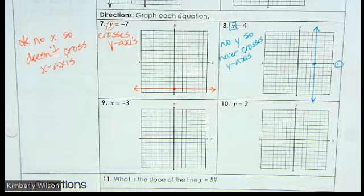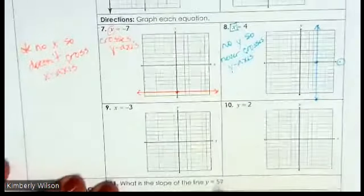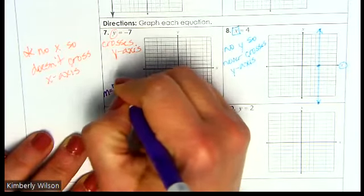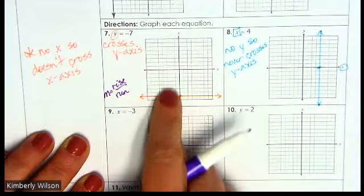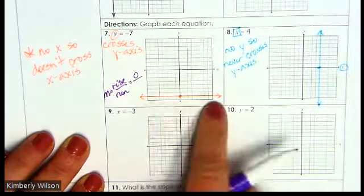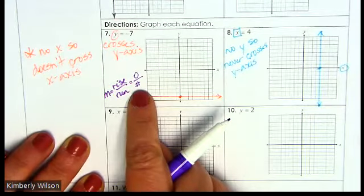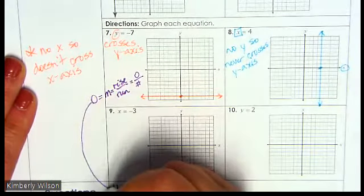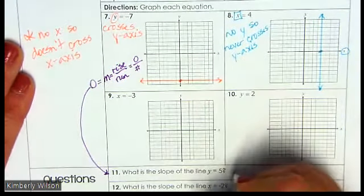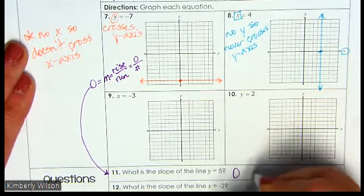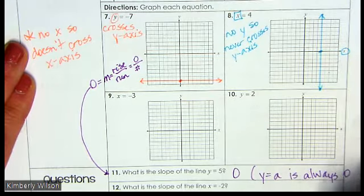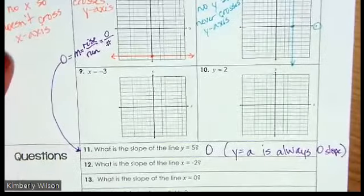Now let's do some thinking without a graph. What is the slope of the line y equals 5? Y equals 5 looks like a horizontal line at a different location. Thinking about slope — remember that's rise over run — am I going up or down at all? No, that's zero. Am I running something? Yes. Zero divided by some number is going to equal zero. So the slope is zero. Whenever it is y equals a number, that is a zero slope. Y equals a is always zero slope.